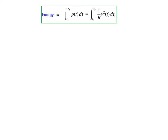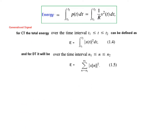We now convert this into a more general form for the continuous time signal. The energy E can be written as an integral, but instead of V squared we write any generic signal x(T). So x(T) squared dT becomes our energy equation for continuous time signals. For discrete time signals instead of an integral we use a summation of the square of the signal, with limits from minus N1 to N2.